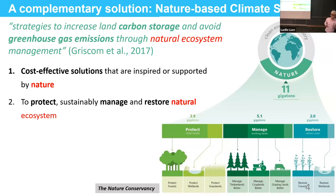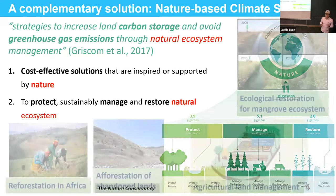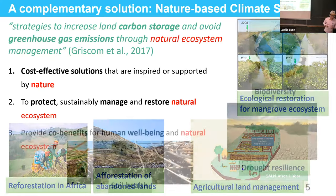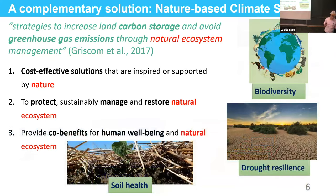I summarized NBCS into three principles. First, it must be a cost-effective solution totally supported by nature, in contrast to solutions supported by artificial systems. Second, NBCS is about protecting, managing, and restoring our natural ecosystem — examples include reforestation, afforestation, ecological restoration, and agricultural land management. Third and most important, NBCS provides co-benefits for human well-being and at the same time has benefits for the natural ecosystem.